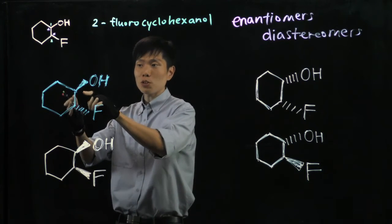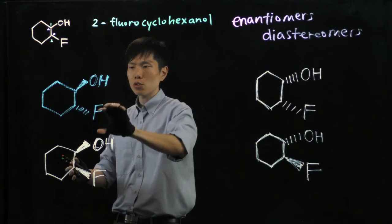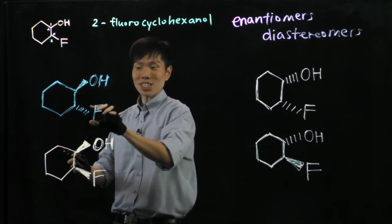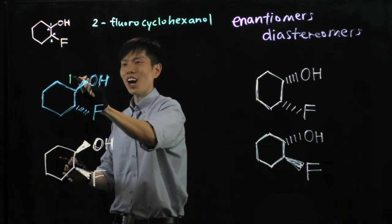Lowest priority hydrogen pointing to the back, so 1, 2, 3, that is a clockwise direction. So this is R.